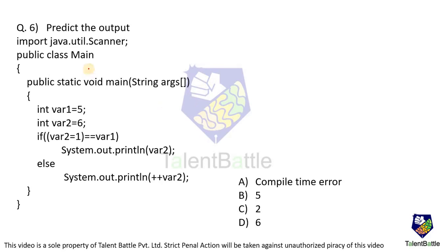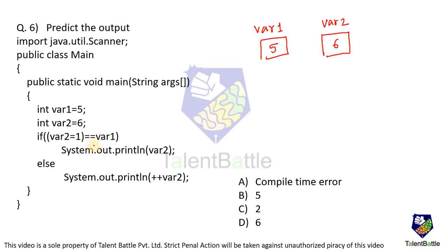The next question: predict the output of a Java code snippet. Execution starts from main. Variable var1 has value 5 and var2 has value 6. Multiple operators are used simultaneously — assignment and comparison operators are both used in the same expression. Solving the parenthesis first: `var2 = var1` assigns the right-hand side value to var2, so var2 gets modified — the value 6 is overwritten by 1.